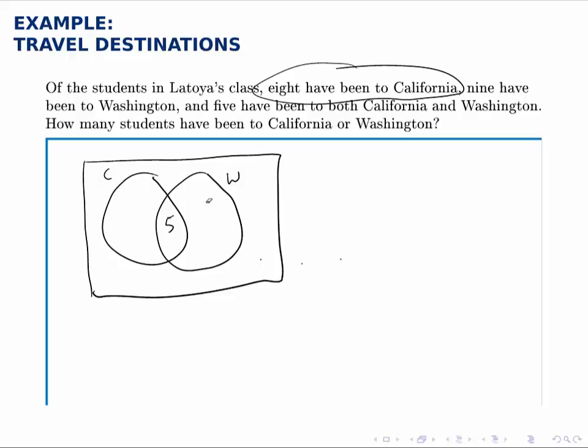The way to do this is to start with the intersection. So the five is correct. That specifically describes that region in the middle, the five have been to both.